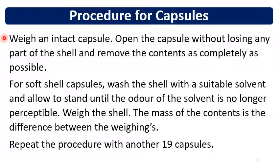For soft gelatin capsules, wash the shell with a suitable solvent and allow to stand until the odor of the solvent is no longer perceptible, then weigh the shell. The mass of the content is the difference between the intact capsule weight and the capsule shell weight. For example, if the intact capsule weighs 1000 mg and the shell weighs 200 mg after cleaning, the content weight is 800 mg. This procedure is repeated with the remaining 19 capsules for a total of 20 units.